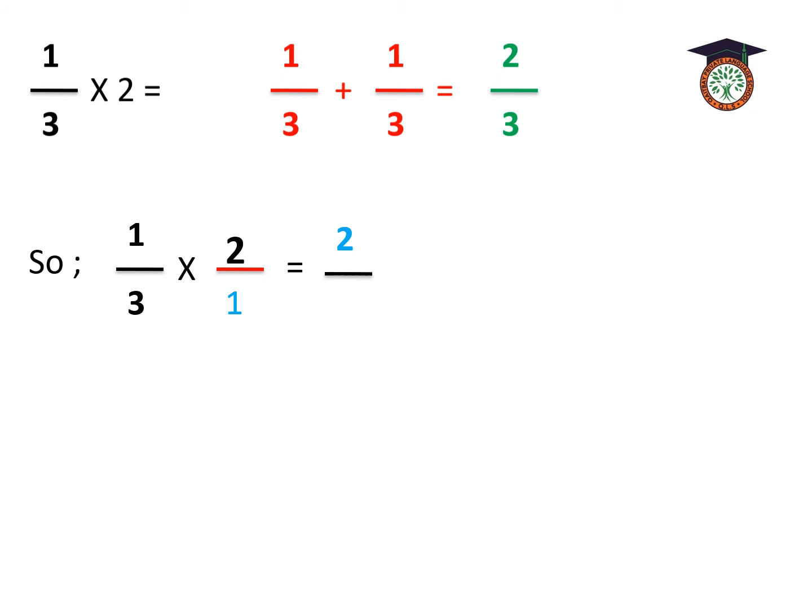One-third times 2 over 1. We are going to make multiplying to the numerator first. 1 times 2 equals 2. And then multiply the denominator: 3 times 1 equals 3. So, we have the same answer for both ways.